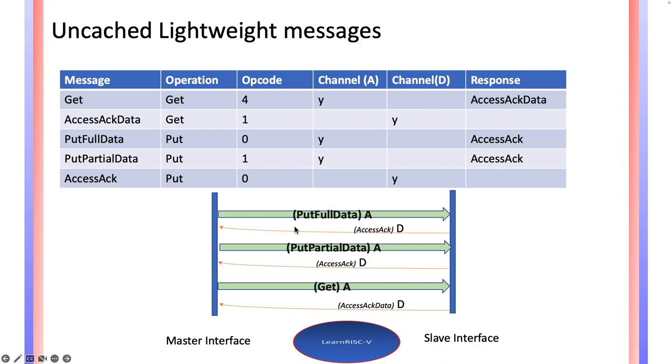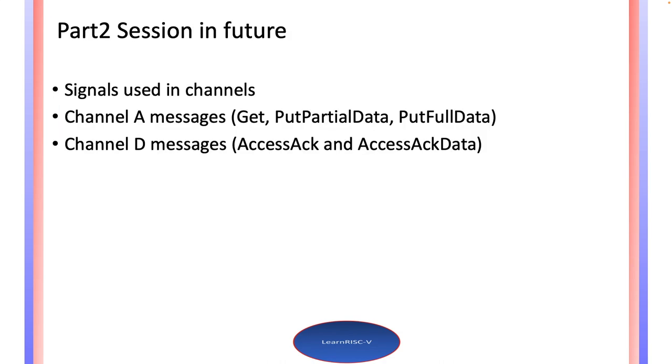Master interface sends a put full data and receives the AccessAcknowledge. Once the data is written, it gets an acknowledgment—there is no data in the response. Same for put partial data for write operations. However, for the get operation, there should be data in the response.